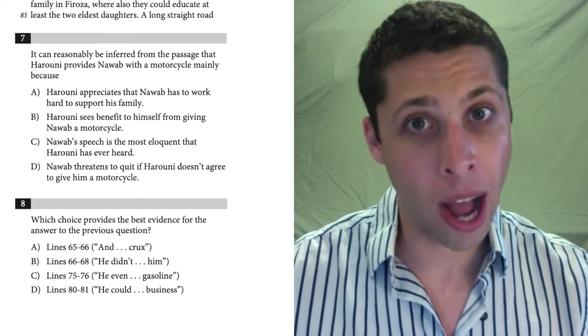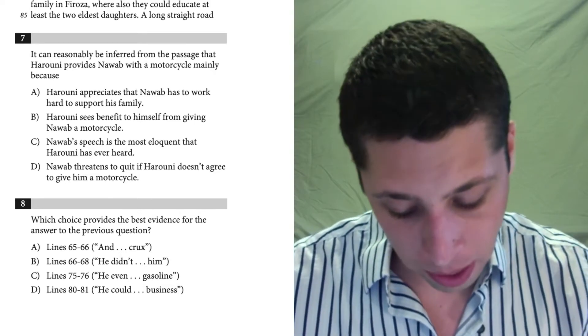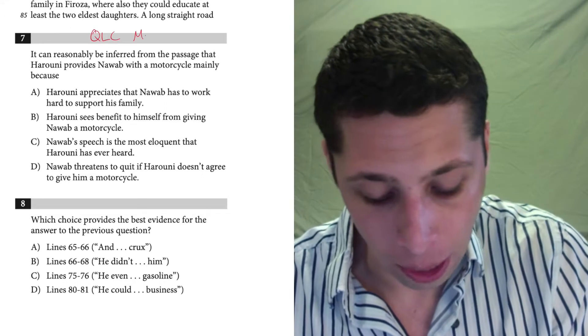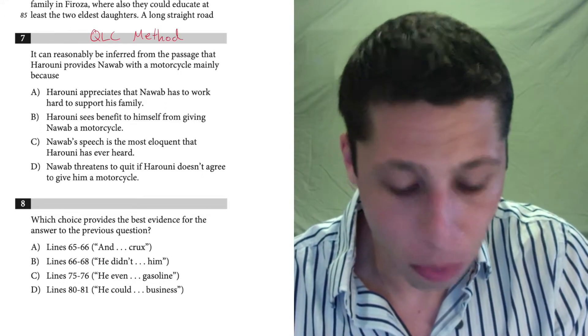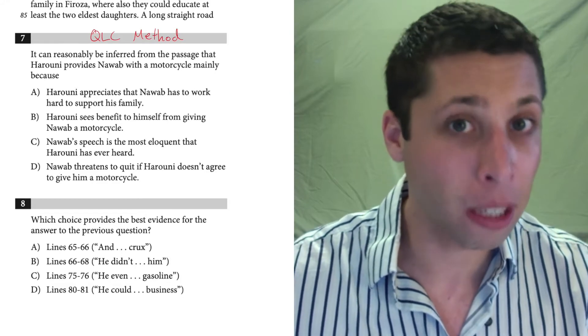So when I go through this, I need to make sure I follow a good process. And this is where the QLC method is going to be really helpful again. This is my way of sorting through pretty much every reading question. But with evidence pairs, it's a little bit more complicated.